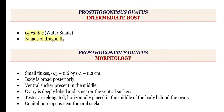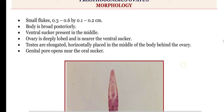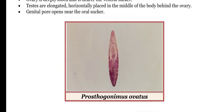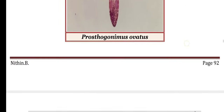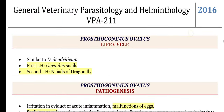The intermediate hosts are the water snail Gyraulus, and the nymphs of the dragonfly — that is, the nymphal or larval stage of the dragonfly. These flukes are almost similar to Dicrocoelium dendriticum in their life cycle.